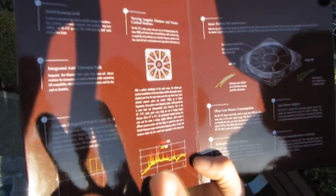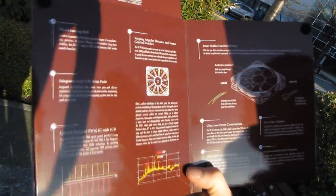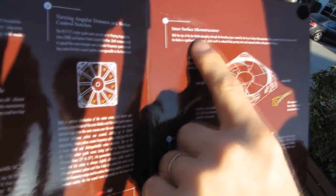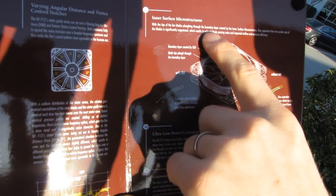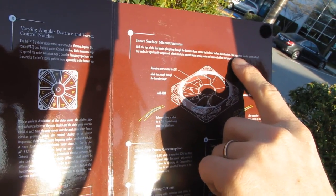They've tried to make it as symmetrical in as many different ways as possible. Inner surface microstructures mean that when the tips of the blades plow through the boundary layer, flow separation from the suction side of the blades is significantly suppressed.